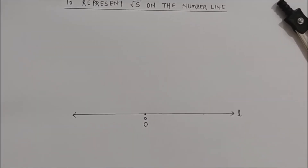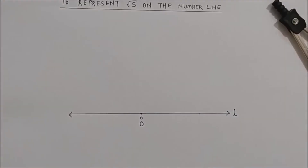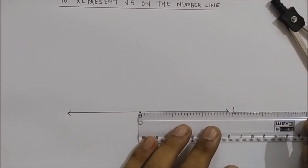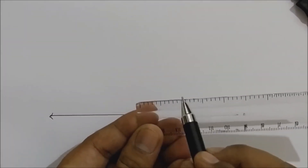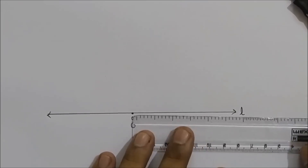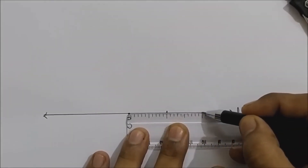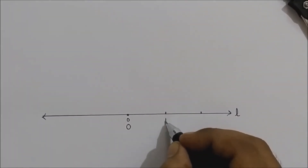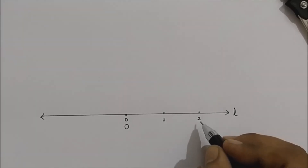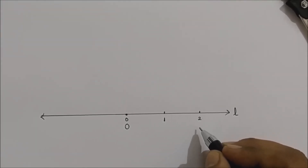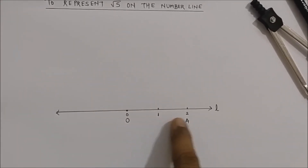On the right side, we are going to represent √5. Using a scale, take distances: this is 1 unit and this is 2 units. Mark these as 1 and 2 on the number line. At position 2, mark point A.